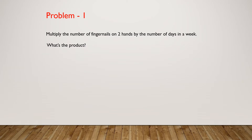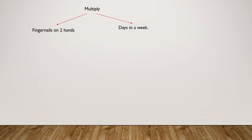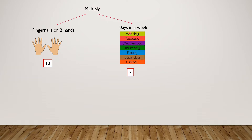Let's review this. So we have to multiply the number of fingernails on two hands by the days in a week. How many fingernails are there on two hands? Right, there are ten. How many days are there in a week? Right, there are seven.